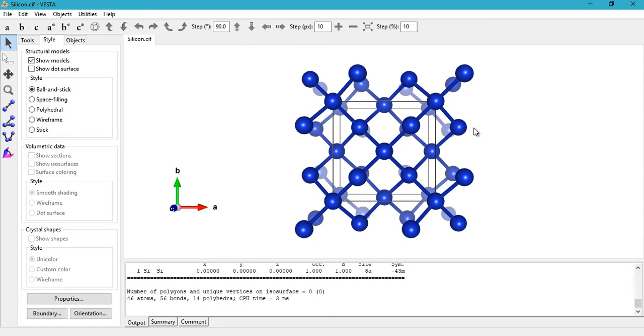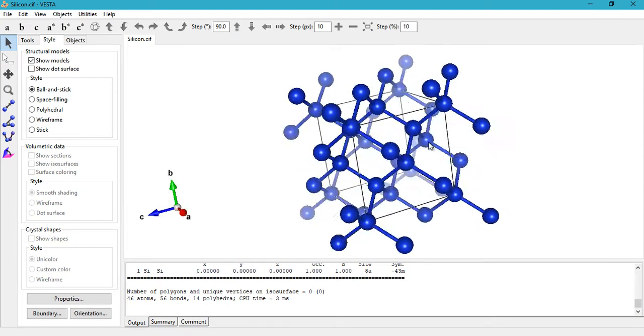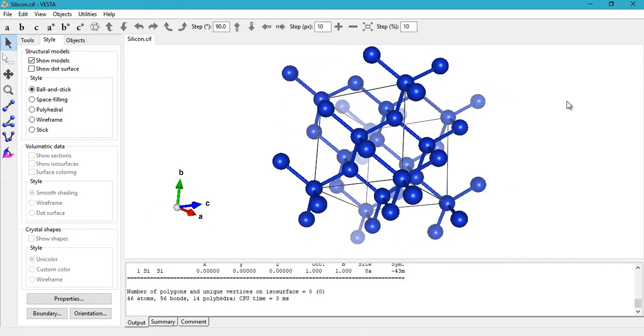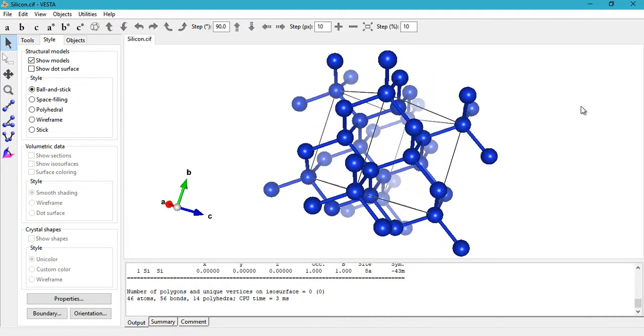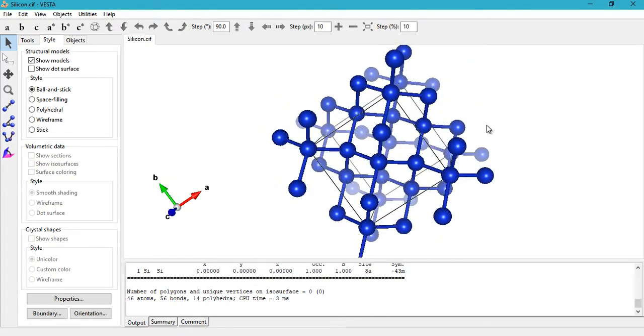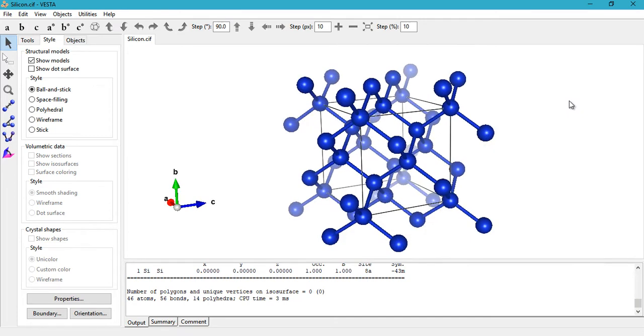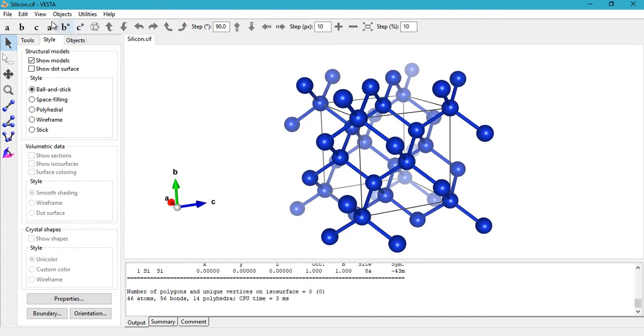In order to visualize a lattice plane, first you need to open a crystal structure. In my case, I have the silicon file that we've been using since the first tutorial. We downloaded this crystallographic information file from the AMCSD database, the American Mineralogist Crystal Structure Database.